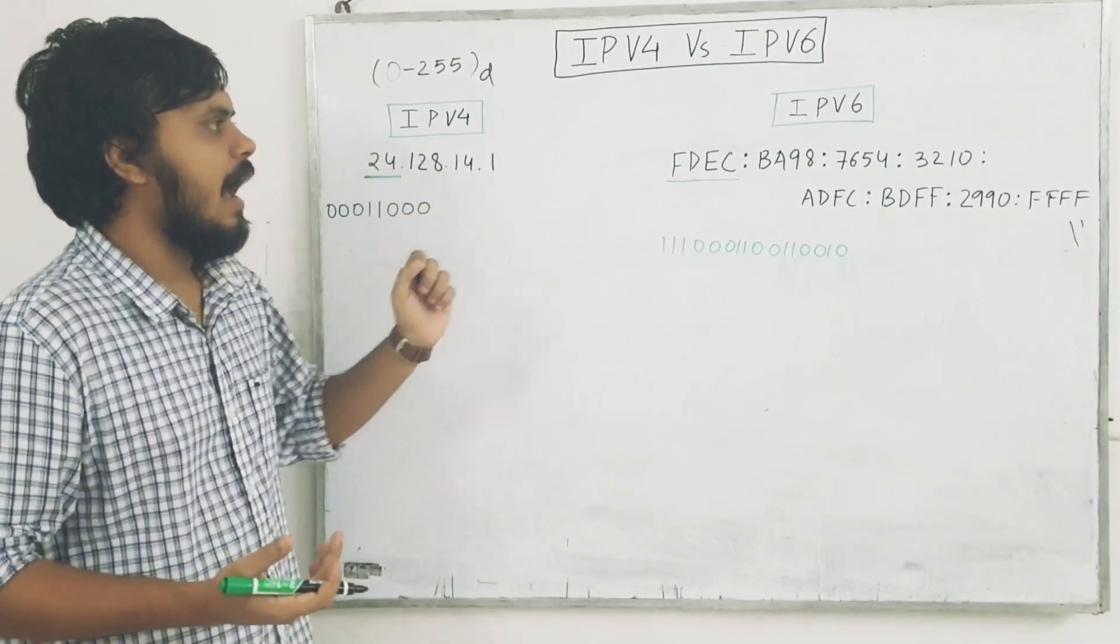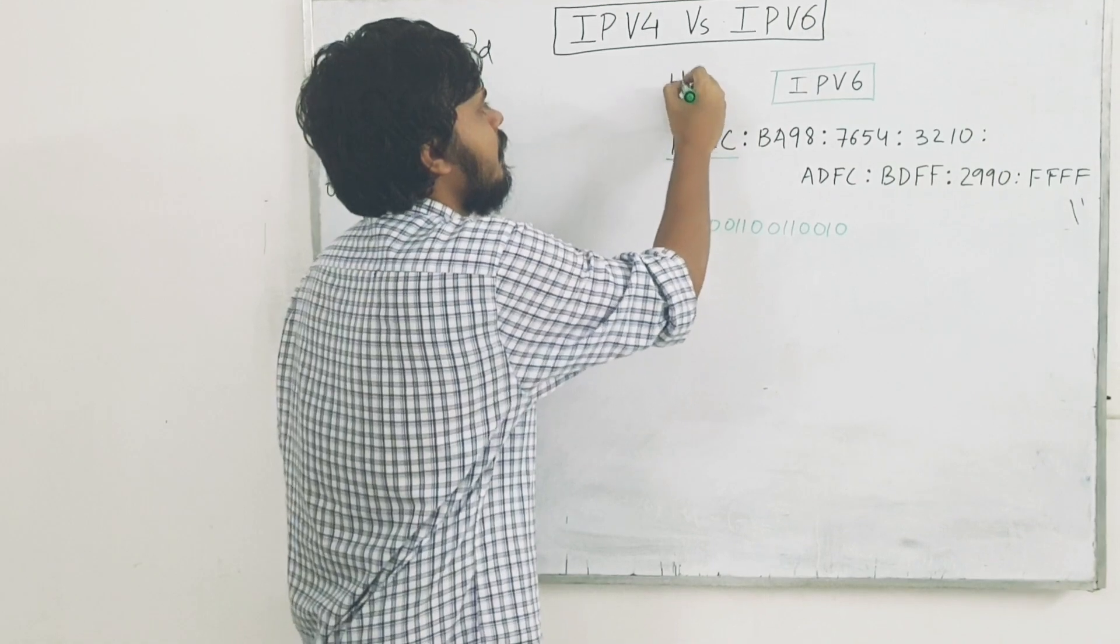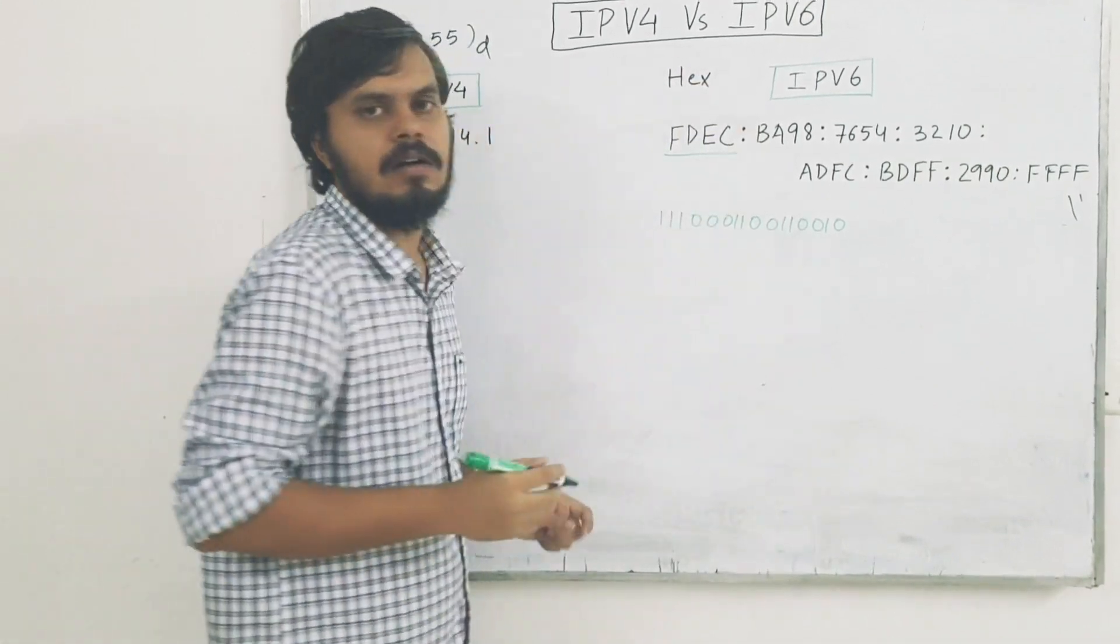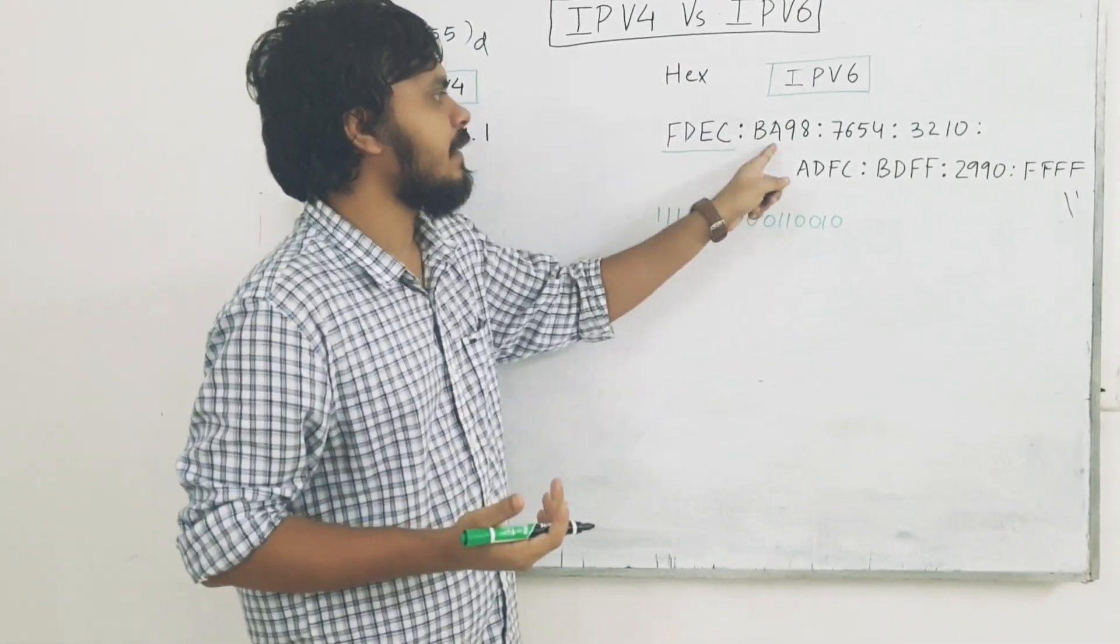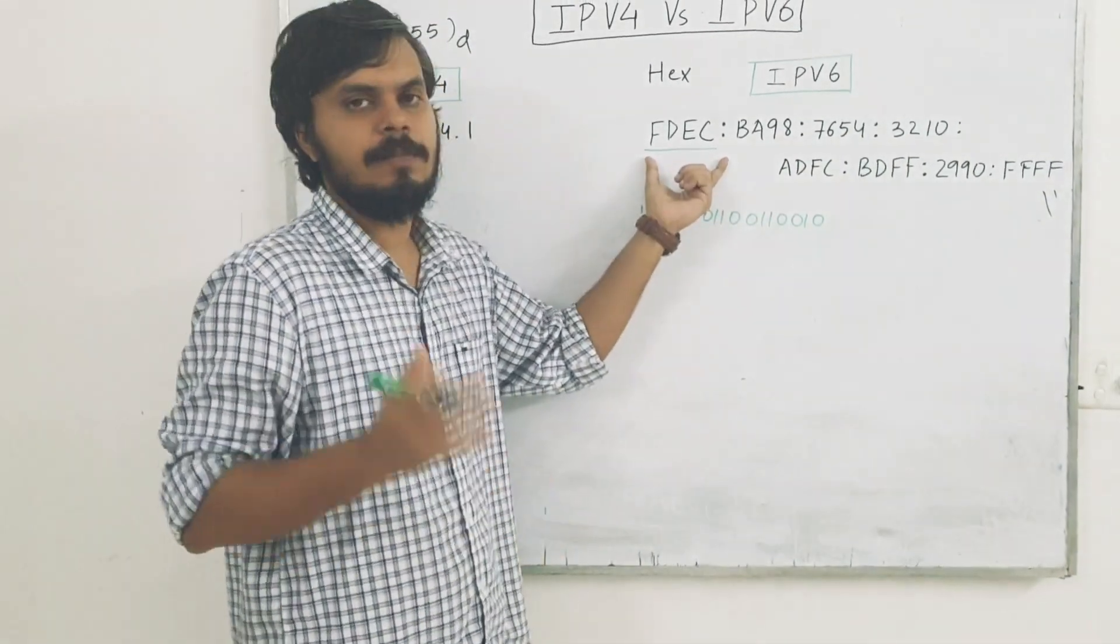So this is IPv4 and this is IPv6. Here instead of decimal, we are forming hexadecimal numbers, and there are eight different sets of hexadecimal numbers.